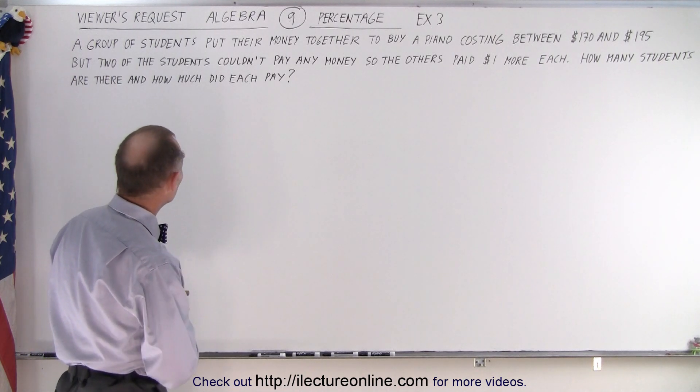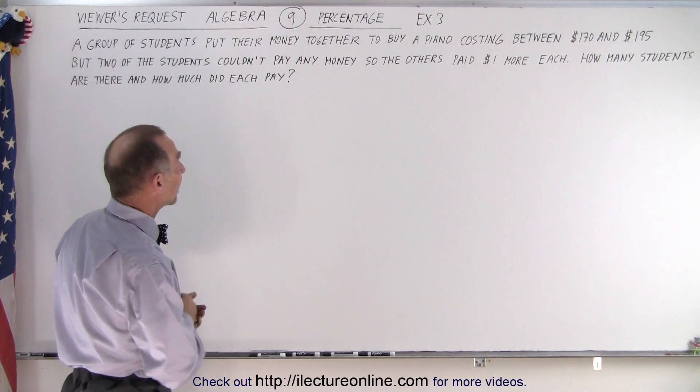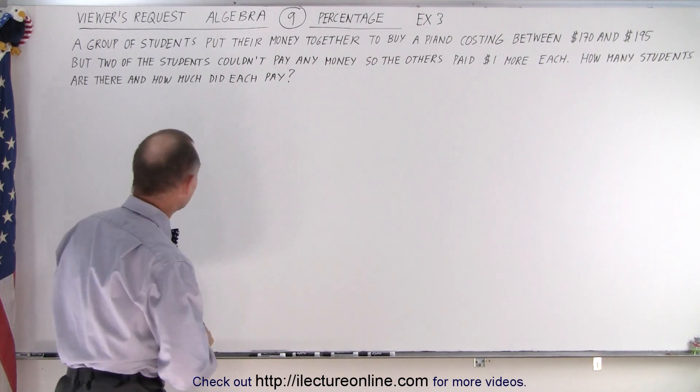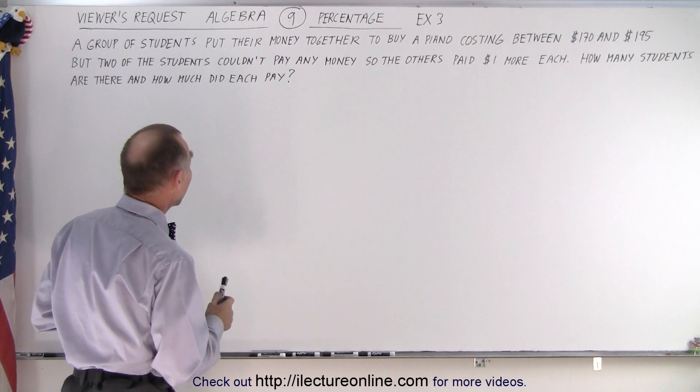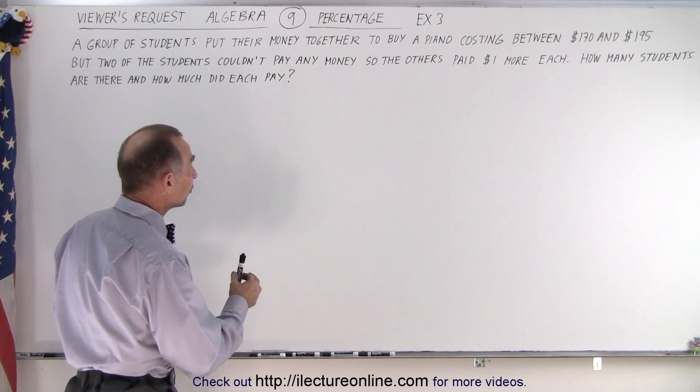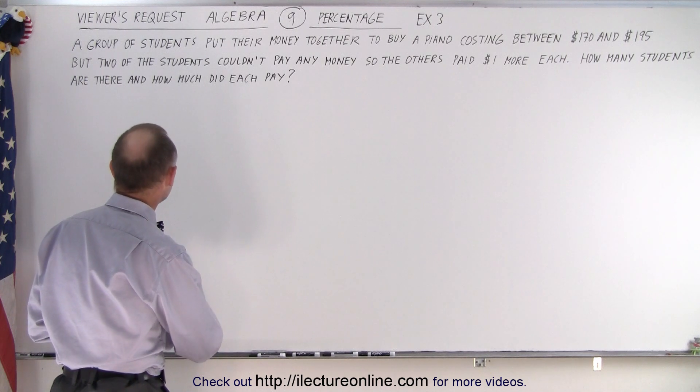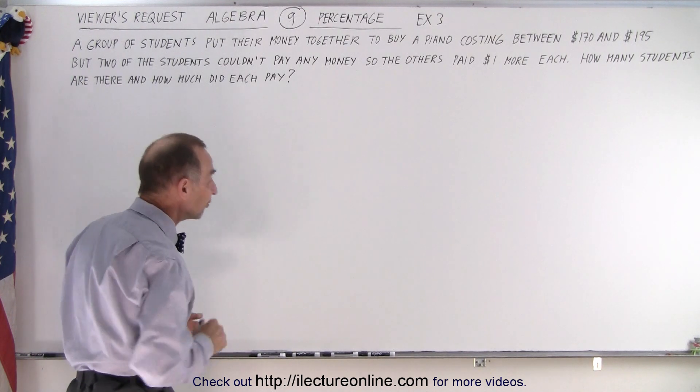A group of students put their money together to buy a piano costing between $170 and $195. But two of the students couldn't pay any of the money, so the others paid $1 more each. How many students are there and how much did each of them pay?